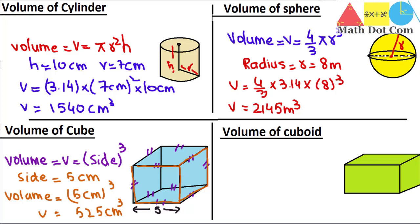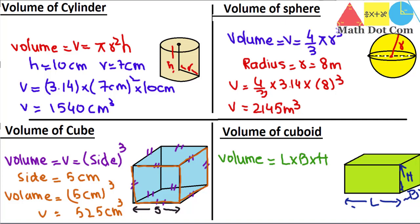Finally, let's find the volume of a cuboid. In a cuboid, all side lengths are of different measures — unlike a cube where all sides are equal — and the faces are not square. The formula for the volume of a cuboid is V = length × breadth × height (L × B × H). We label the three dimensions as L, B, and H. If you have all three values, you can easily find the volume.